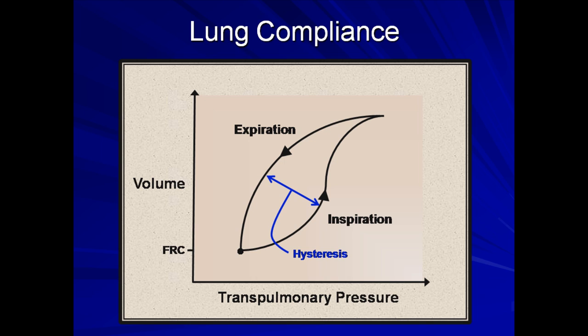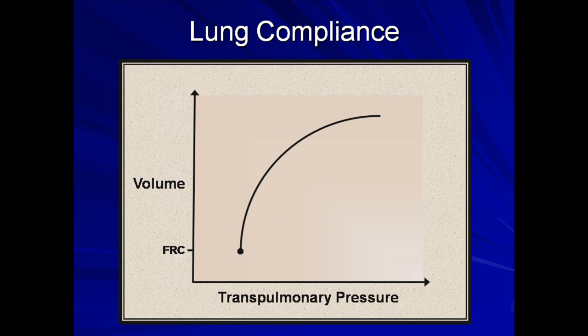Let's take a look at how lung compliance changes in two prototypical pathologic conditions. For simplicity, we will look at compliance during the expiratory phase of respiration. First, in pulmonary fibrosis, the fibrotic changes make the lungs stiffer, so therefore the slope of the compliance curve is less. Because the lungs are less compliant, they are less affected by the chest wall's outward elastic pull, and therefore the FRC is lower. Therefore, patients with pulmonary fibrosis tend to breathe at lower lung volumes.